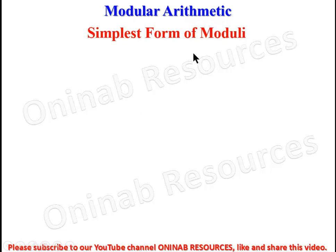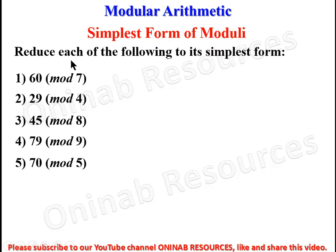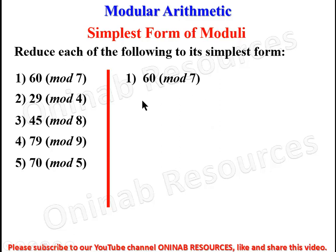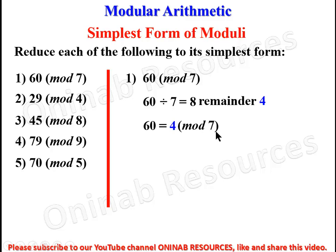Now we look at the simplest form of moduli. Reduce each of the following to its simplest form. First: 60 mod 7. In modulus 7, the digits are 0, 1, 2, 3, 4, 5, and 6. We divide 60 by 7, which gives 8 remainder 4. Therefore, 60 = 4 mod 7, and this is the simplest form.